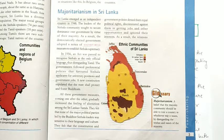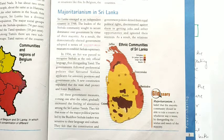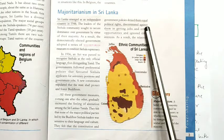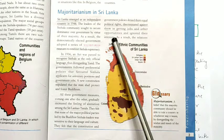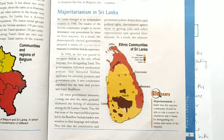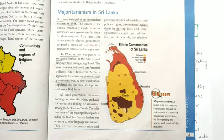These acts and measures gradually increased the feeling of alienation among Sri Lankan Tamils. They felt completely left out. They felt that the constitution and government policies denied them equal political rights, discriminated against them in jobs and opportunities, and ignored their interests. As a result, tension began between Sinhala and Tamil communities. Sri Lankan Tamils formed parties and started demanding recognition of Tamil as an official language, equal opportunities in education and jobs, and regional autonomy.